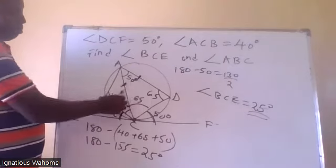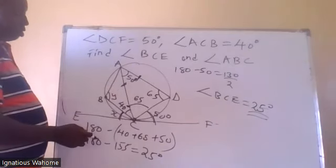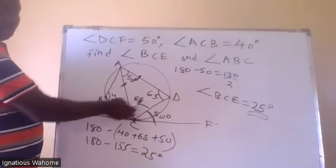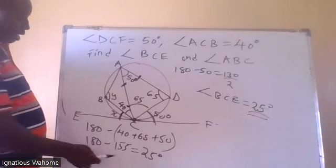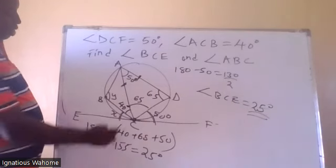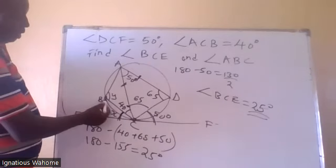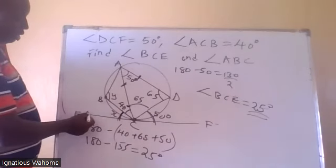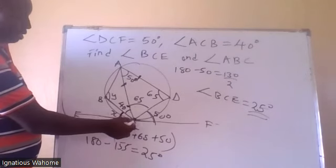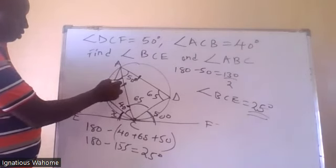From there, you apply the property. So therefore we have this angle — this side is equal to this — so these two angles are equal to 65. And then this angle is 25. If this angle is 25, which other angle is 25? Angle BCE is 25. This chord makes this angle; the same chord subtends this angle. So this angle is 25.